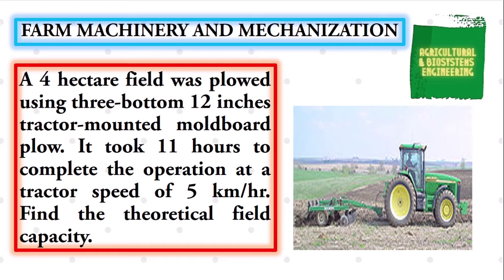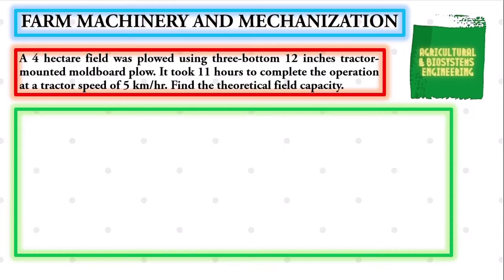Find the theoretical field capacity. To begin with, we first identify our given. We have the land area of 4 hectares, the tractor-mounted moldboard plow having 3 bottoms, 12 inches.